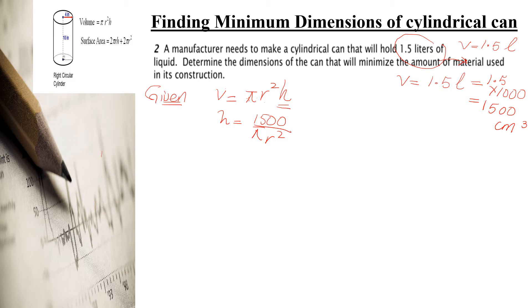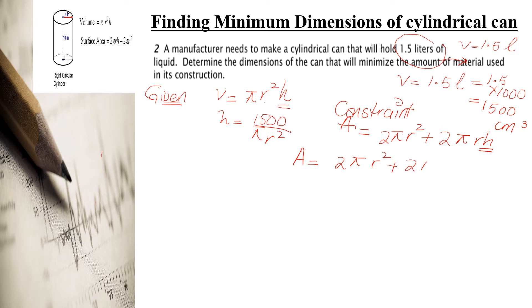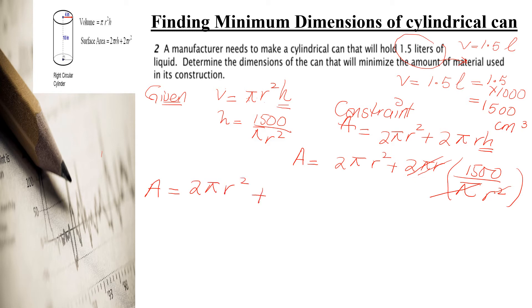Write down the constraint equation. Under the given conditions, the surface area equals 2πr² plus 2πrh. Now replace h with 1500 divided by πr². You can see that the π cancels with π and one r cancels, giving you: surface area equals 2πr² plus 2 times 1500 over r, which is 3000 over r.